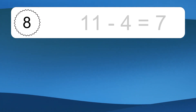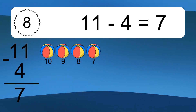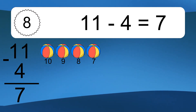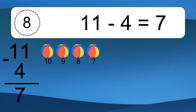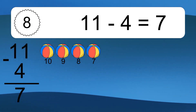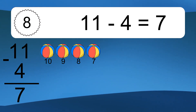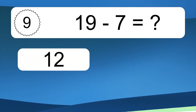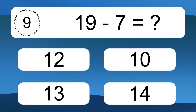11 minus 4 equals what? 11 minus 4 equals 7. Let's count it: 10, 9, 8, 7.